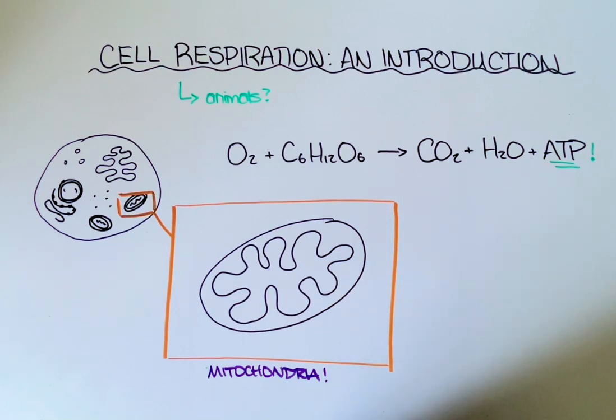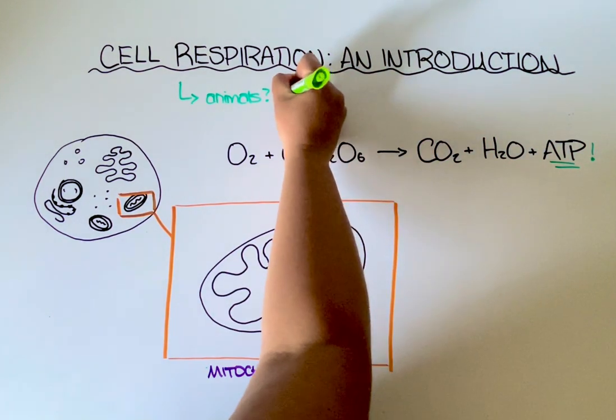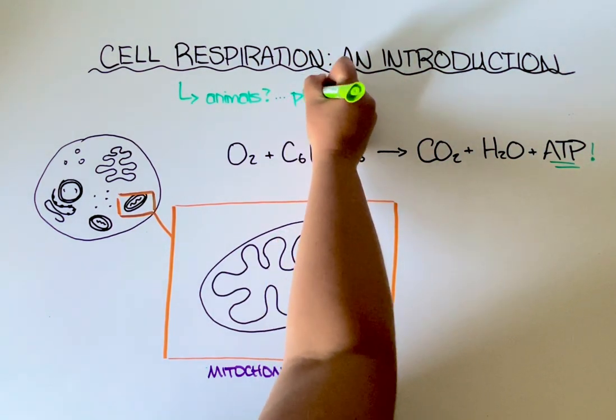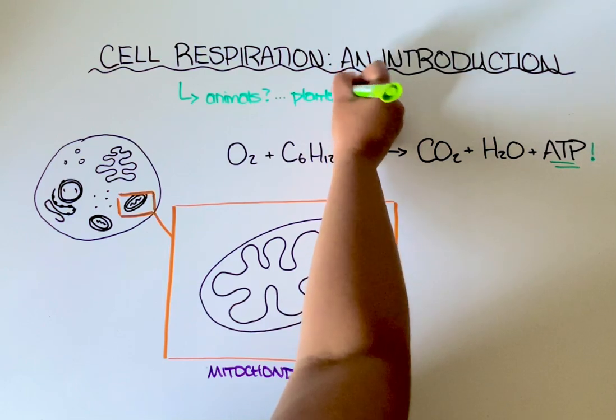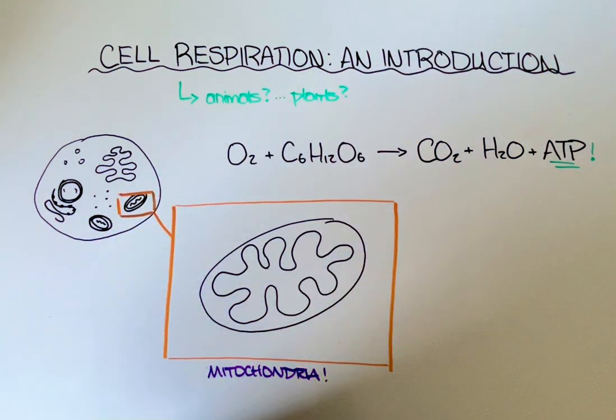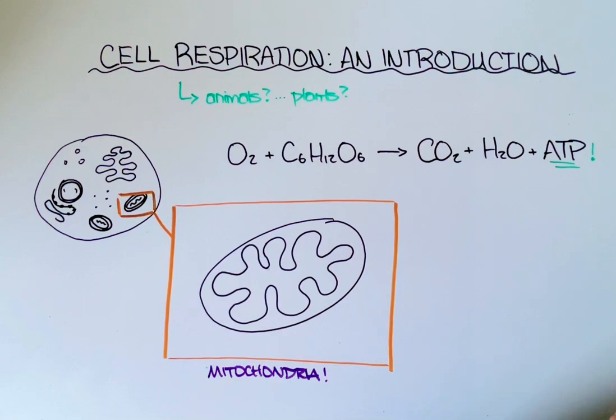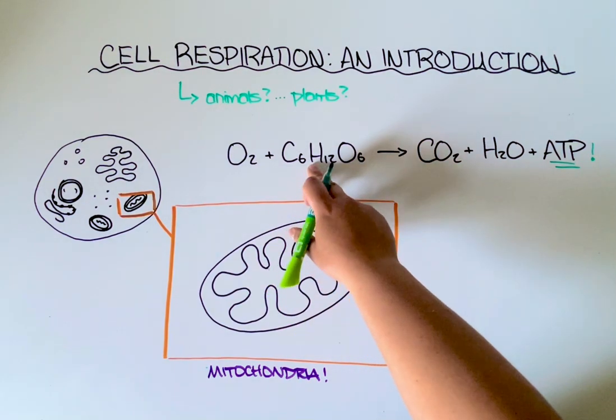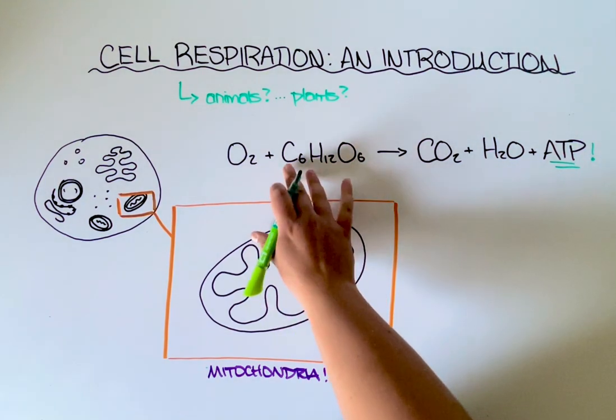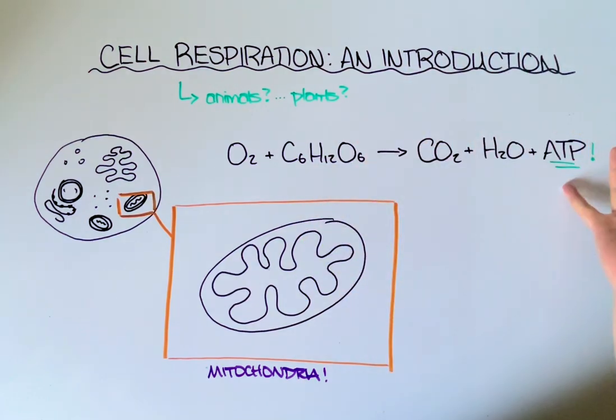However if you've watched some of our previous videos you've maybe noticed that plant cells also have these organelles. Yes plants have mitochondria so they too can do cell respiration to make their own ATP. Obviously they also do photosynthesis. That's how they create their own glucose. But then sometimes they'll take that glucose and do this to convert it into ATP. So both plants and animals do cell respiration.